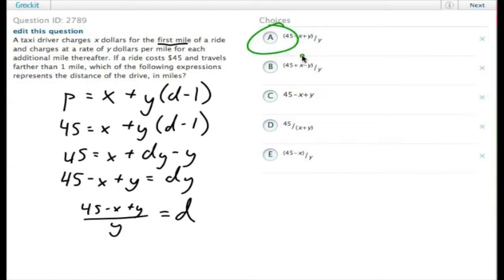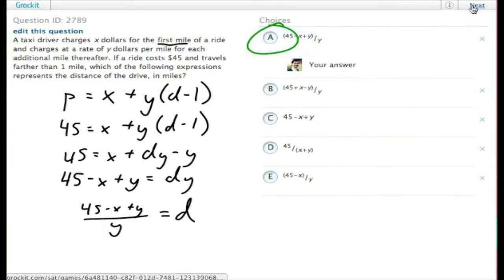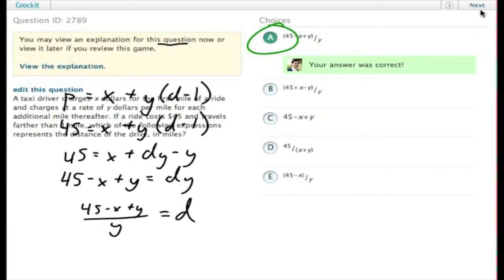As it says, we want to have a formula that represents the distance given the price of this trip. So we isolate D in this case, and it turns out to be answer A. Let's go ahead and check our work. And A is indeed correct.